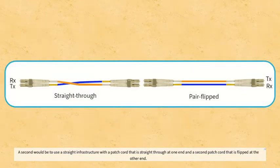A second would be to use a straight infrastructure with a patch cord that is straight through at one end and a second patch cord that is flipped at the other end.